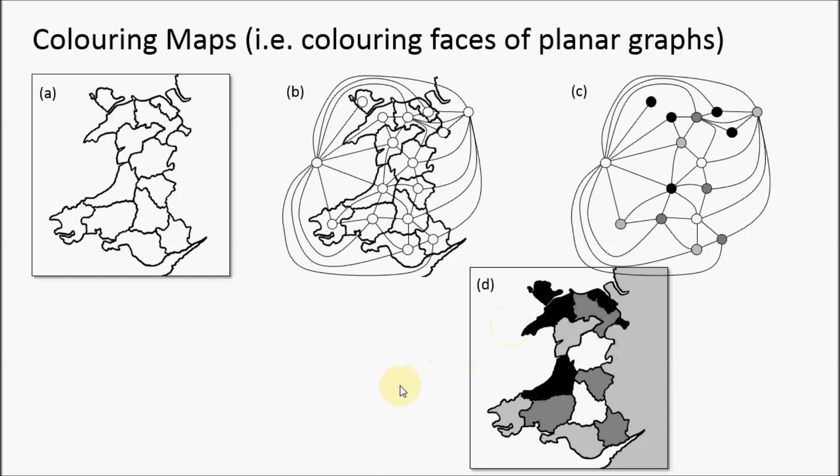The four coloring theorem, as this became known, was one of the most famous problems in all of mathematics for about 150 years. It was eventually solved in the 1970s.